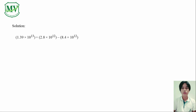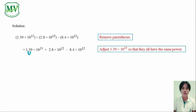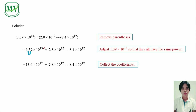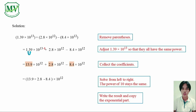First, remove all the parentheses. Again, notice that their powers are not the same. 1.39 x 10 raised to the power of 13 is not equal to the others in terms of power. So we have to rewrite it. Move the decimal point one place to the left and subtract 1 from the power of base 10. We can finally collect the coefficients now that they all have the same power. Solve from left to right: 13.9 plus 2.8 minus 8.4 is equal to 8.3. Copy the exponential part.